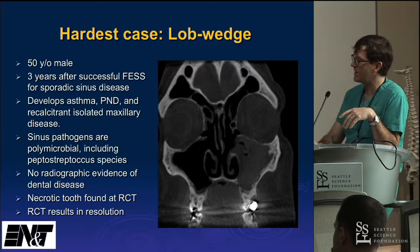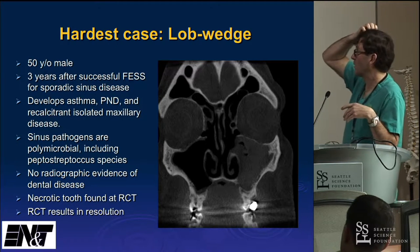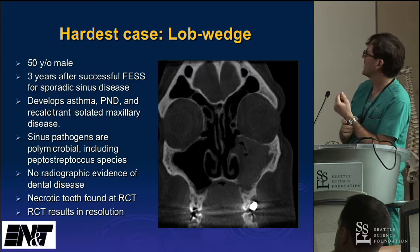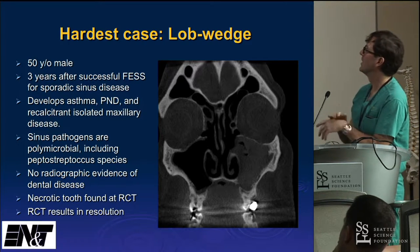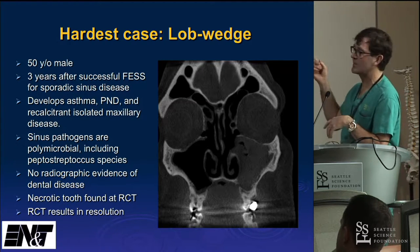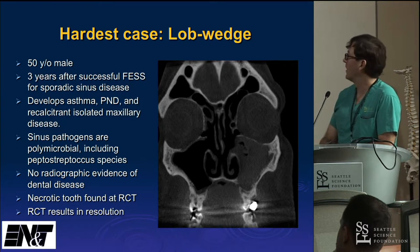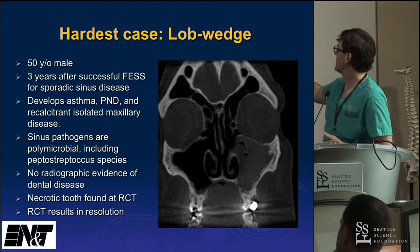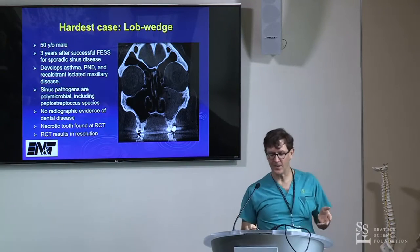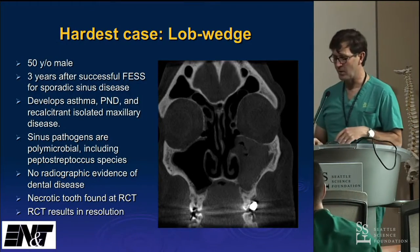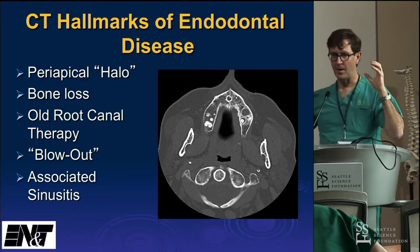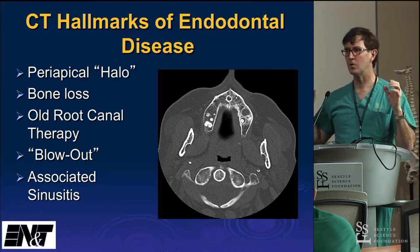The hardest case is a 50-year-old policeman from Spokane. We did a standard limited FESS for sporadic sinus disease and he did well for three years. Then he developed severe asthma, post-nasal drip, and sinusitis we couldn't clear up until we found that peptostreptococcus was growing — in my mind, that is pathognomonic for a dental abscess. There was no evidence of dental disease on CT, but I sent him to my endodontist anyway. When the root canal was performed, the sinusitis, the asthma, and all of his problems resolved.